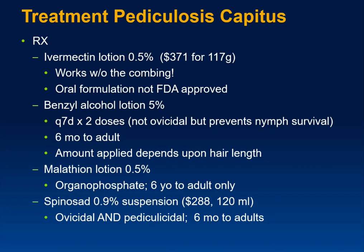There is malathion lotion, an organophosphate — I would generally steer clear of organophosphates, especially in younger patients. A more recently approved option is spinosad 0.9% suspension, which is ovicidal and pediculocidal. If you want to ensure killing of both larvae and adults, this might be the way to go, though it is expensive. Age group is six months to adulthood.